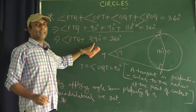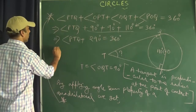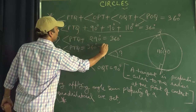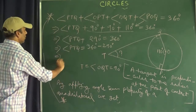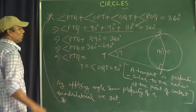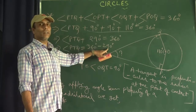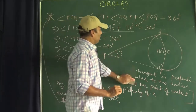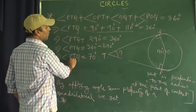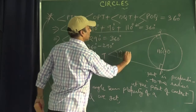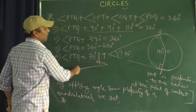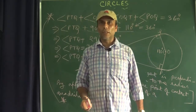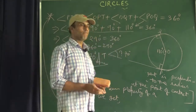Therefore angle PTQ equals 360 degrees minus 290 degrees, which gives us 70 degrees. So angle PTQ equals 70 degrees, which is our answer. This question often comes as multiple choice, and if you know the technique, you can solve it very easily.